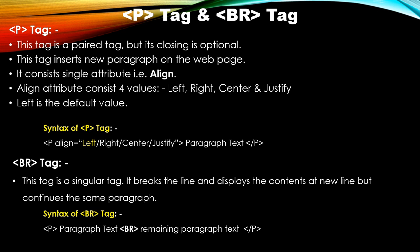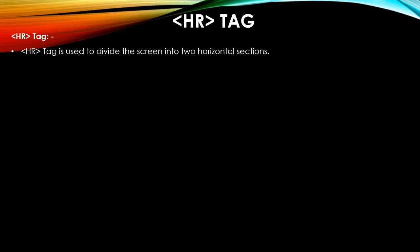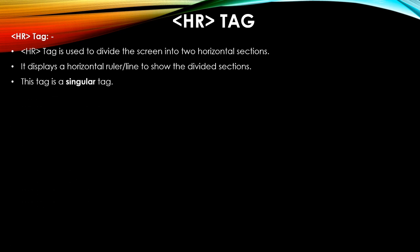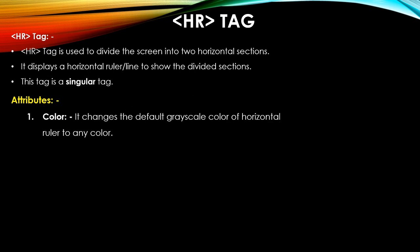Another tag is the hr tag — hr stands for horizontal ruler. This horizontal ruler tag is a singular tag, mainly used to divide the screen into two horizontal sections. These sections are not scrollable. It displays only a horizontal line or horizontal ruler to divide the browser window. The hr tag has multiple attributes — the first is color.